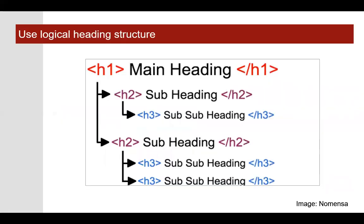Headings should follow a logical structure. The first heading in your document or content should be Heading 1 — your top-level heading — followed by Heading 2 for section headings, followed by Heading 3 for subsection headings. Typically, normal or paragraph style is used for paragraphs of text or default regular text that's not a heading.